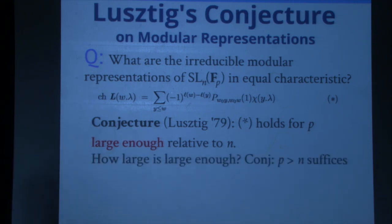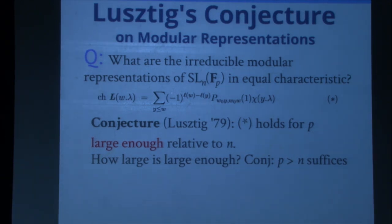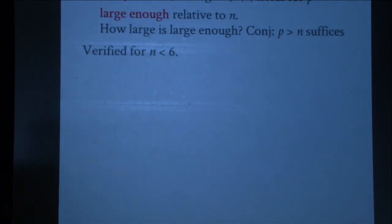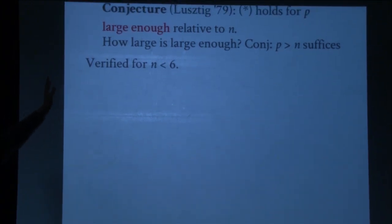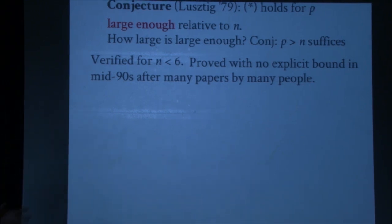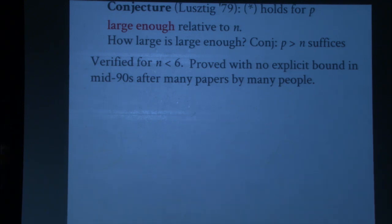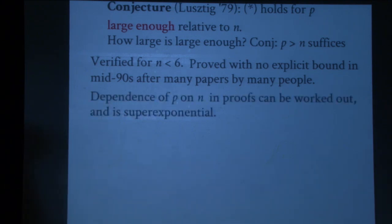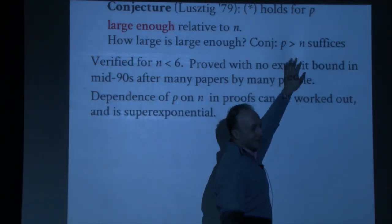The question is how large 'large enough' is. Lusztig conjectured stabilization kicks in as soon as the prime exceeds the Coxeter number. Up to SL5, the conjecture is totally true. The full conjecture was proved by the mid-90s with many papers — but without an explicit bound on p. Working through the proofs, the dependence is super-exponential, whereas it's believed to be linear.